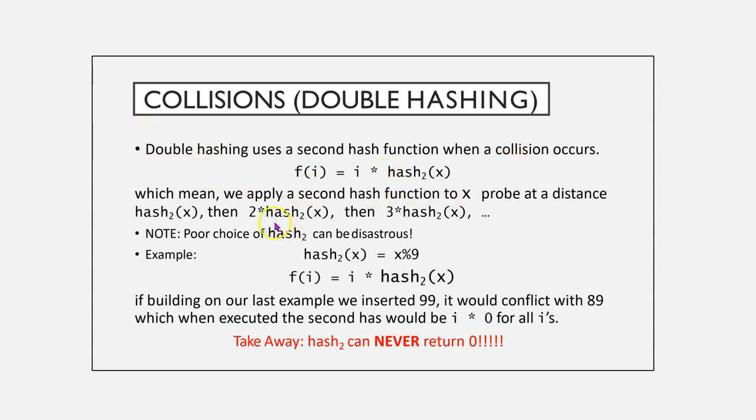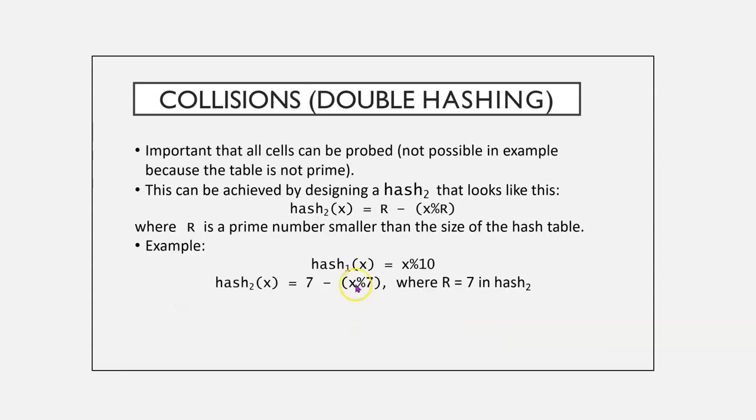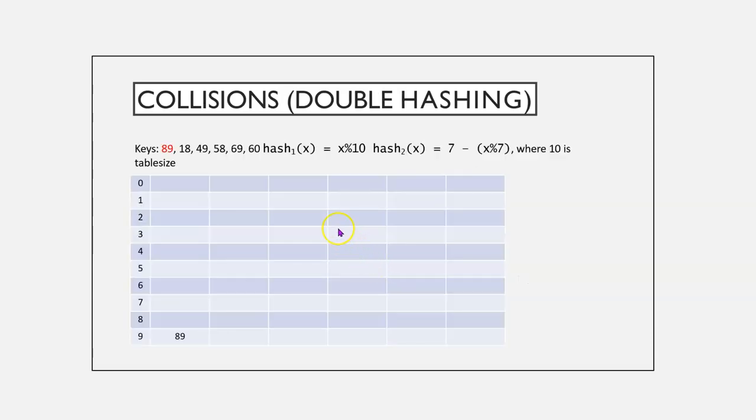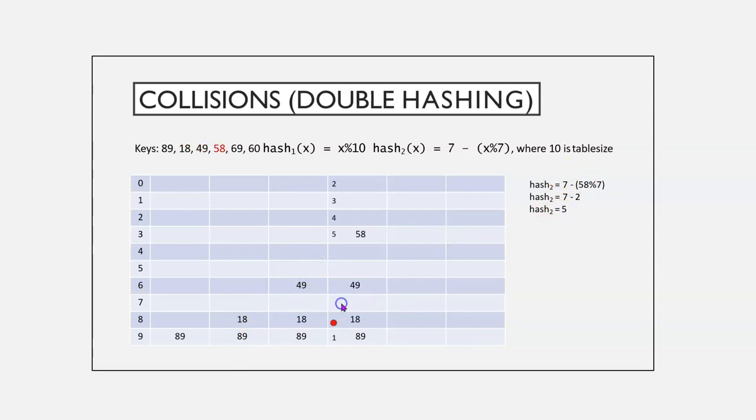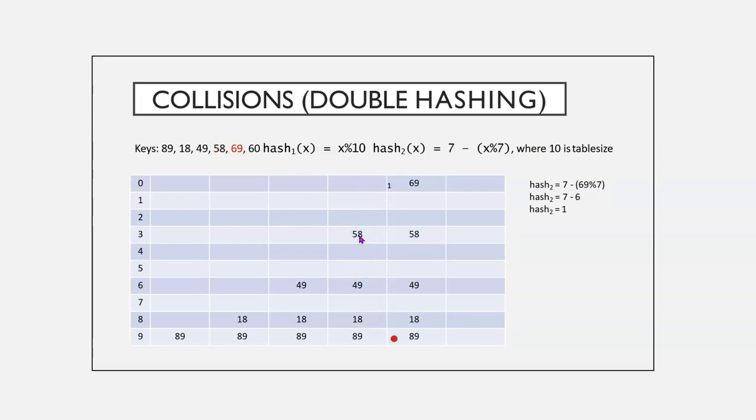Double hashing introduces a second hash function, which means we apply a second hash function to x, and then probe at a distance. And, we could use 2 times x hash 2, 3 times x hash 2, and so forth. So, hash 2 of x equals x mod 9, for example. F of i equals i times hash 2. If we build on the last example, we insert 99, it would conflict with 89. Basically, hash 2 can never return 0, or you'll definitely have problems. It's important that all cells can be probed. This can be achieved by designing a hash function that looks like r minus x mod r, where r is a prime number, smaller than the size of the table. So, here, using that example, we'll get 18, hashes 49, where we have a first conflict. We'll see it hashes to 7 on our second shot. We'll see, then we'll see 58. Because that is a collision, it will hash to 5 after applying that algorithm, and so forth.